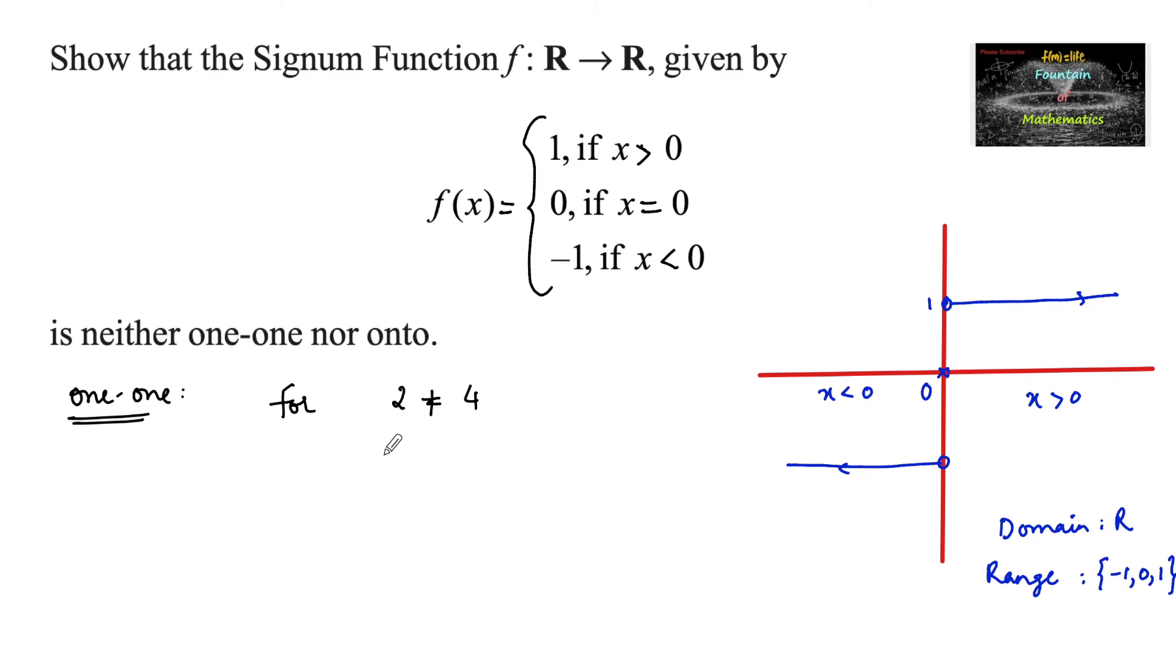So we can write here f of 2 is equal to 1 and f of 4 is equal to 1. So f of 2 equals f of 4, means for 2 distinct elements you are getting same image. For 2 and 4, different elements, you are getting same image and hence we can say that it is not one-one. Therefore f is not one-to-one. I have taken one example to disprove it.